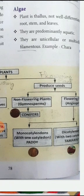Angiosperms include two types: monocotyledons and dicotyledons. Monocotyledons have one seed part, while dicotyledons have seeds that split into two equal parts. This is the classification of plants in the classwork notes.